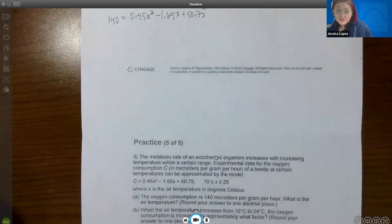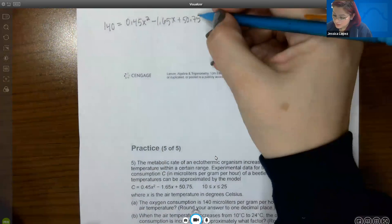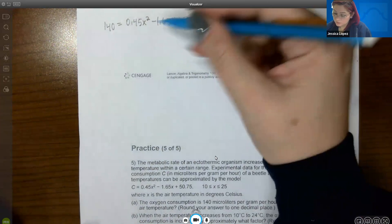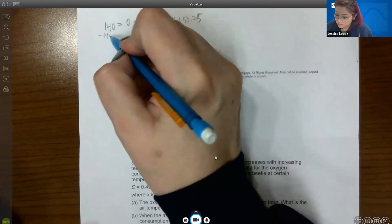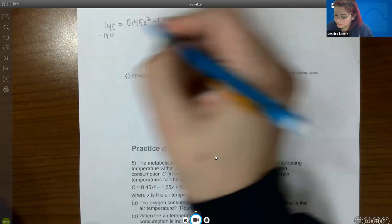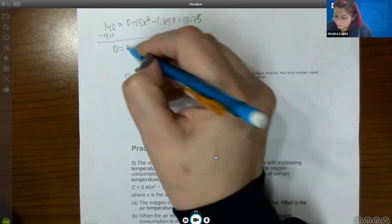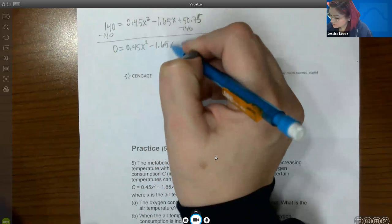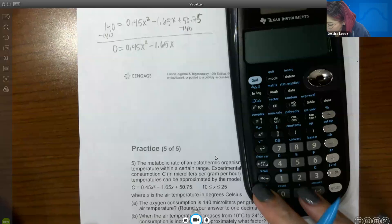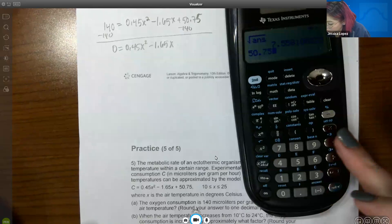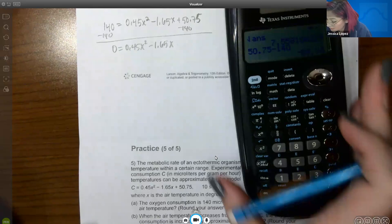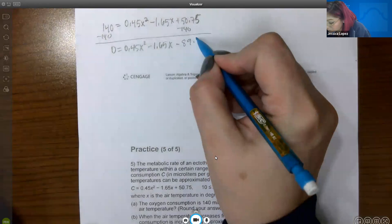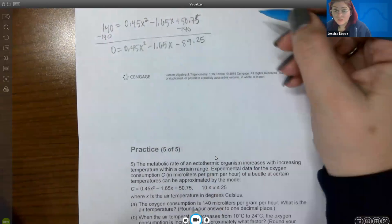And since they want me to find the air temperature, that means they want me to find X. And I do not know how to factor anything with decimals in it. So I'm going to subtract the 140 so I can get it equal to zero. And I get zero equals 0.45 X squared minus 1.65 X. And then here I have 50.75 minus 140. I get negative 89.25. So I am going to use my quadratic formula.